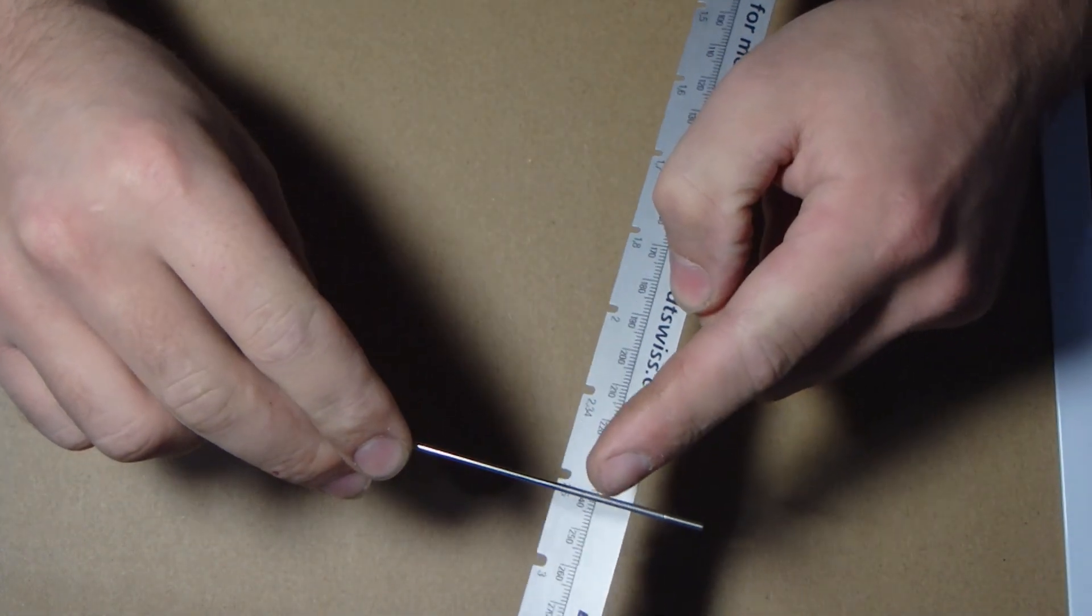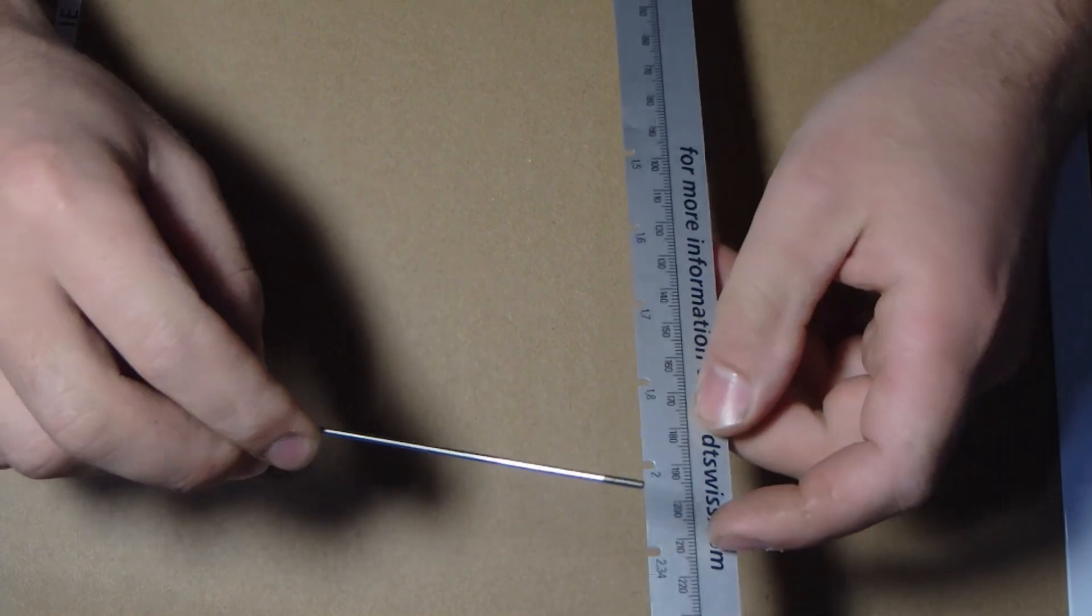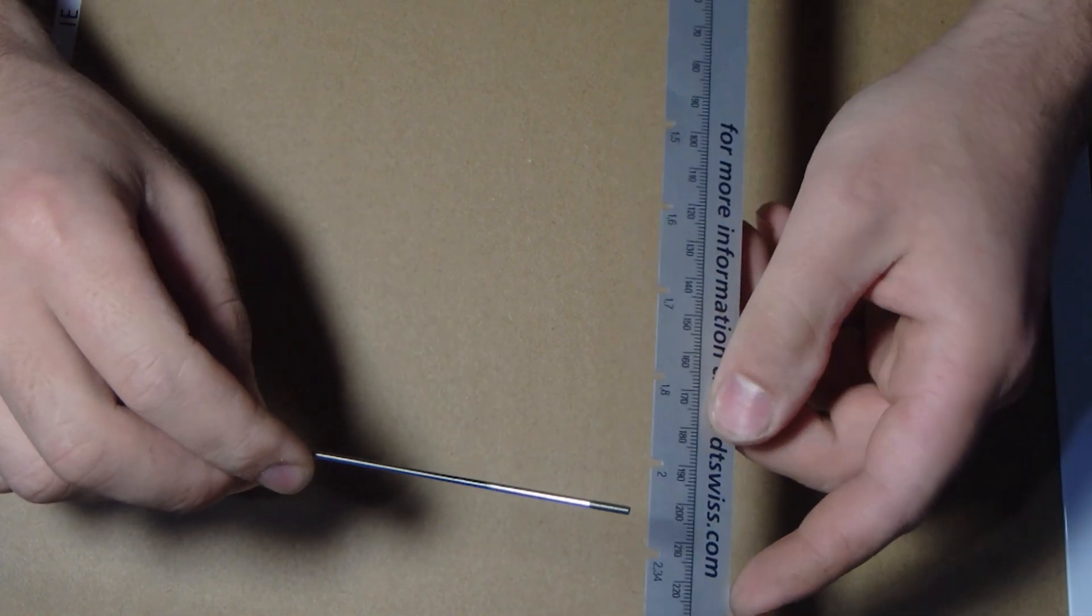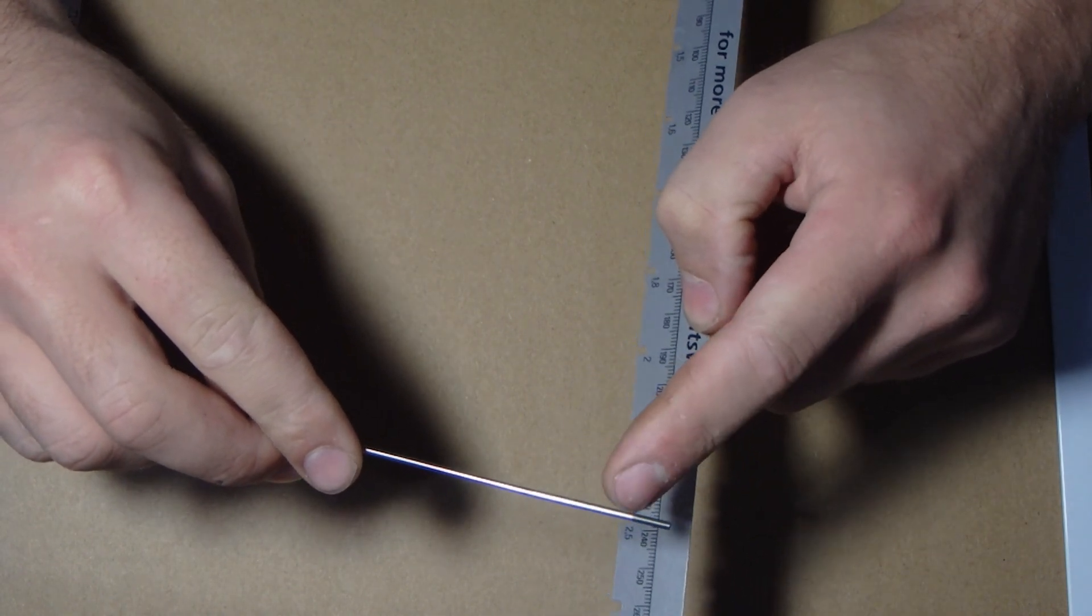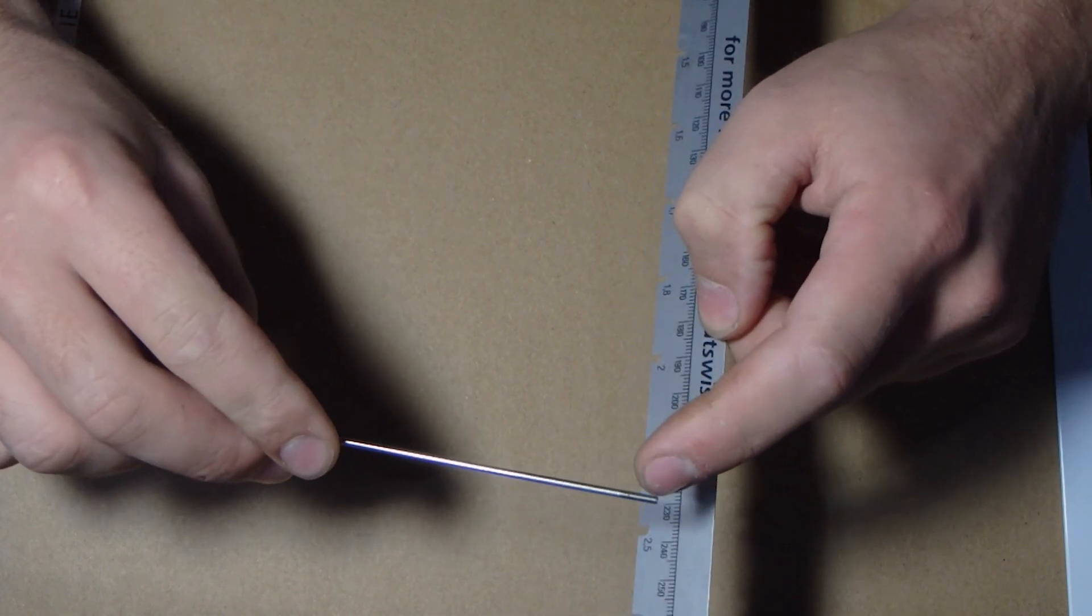And then the last section you'll be interested in is this point here just before the end of the thread. So the standard 14 gauge spoke is 2 millimeters through this section, and then the threads are usually slightly larger because they're not cut, they're actually rolled into the spoke.